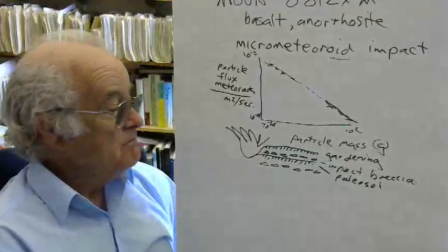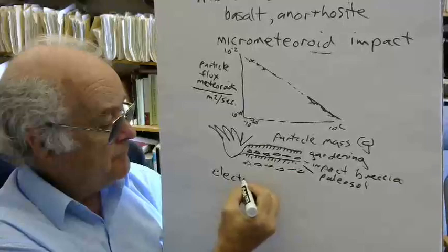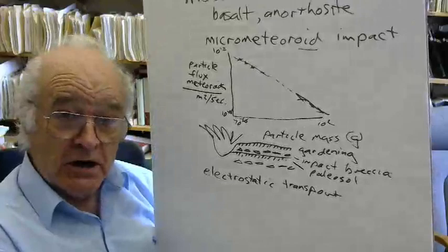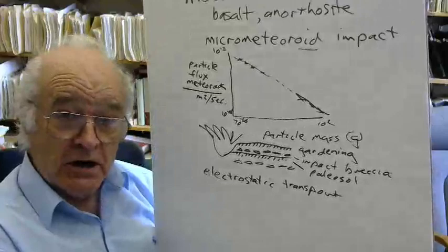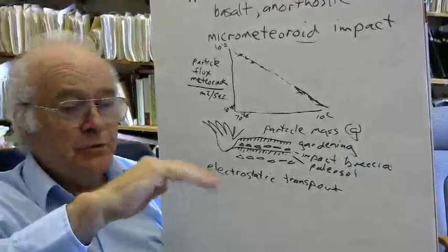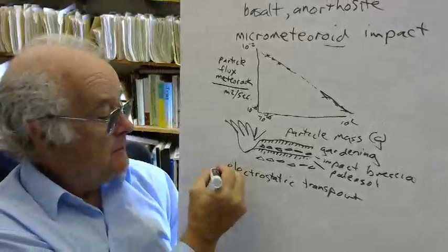This then is a paleosol. A whole bunch of these were found in a core that was taken by the Apollo missions. There are some other effects too. There is electrostatic transport. Some of the really fine-grained material on the moon actually gathers a charge from the sun. And this is actually visible on the horizon.